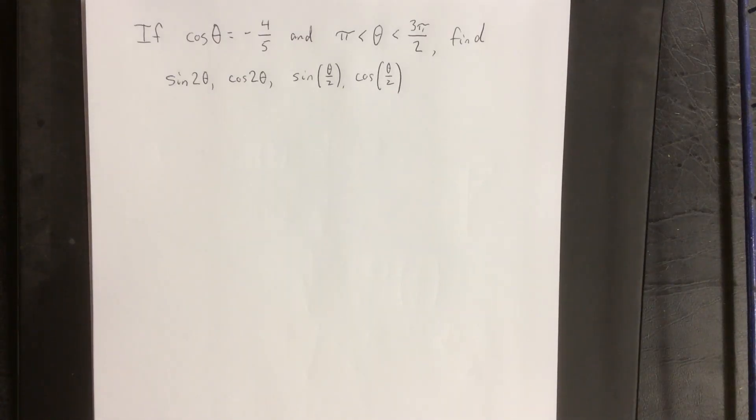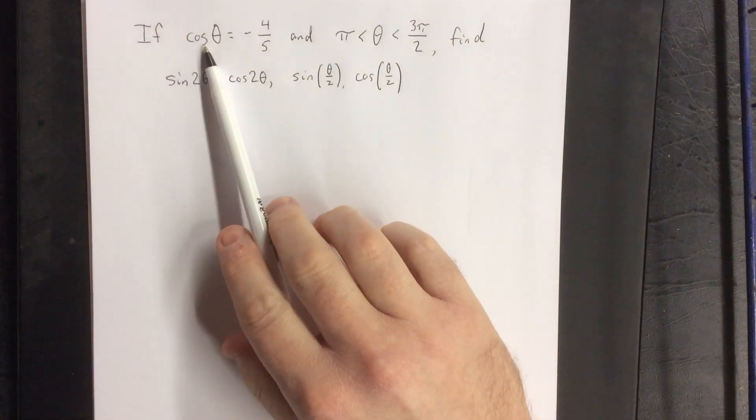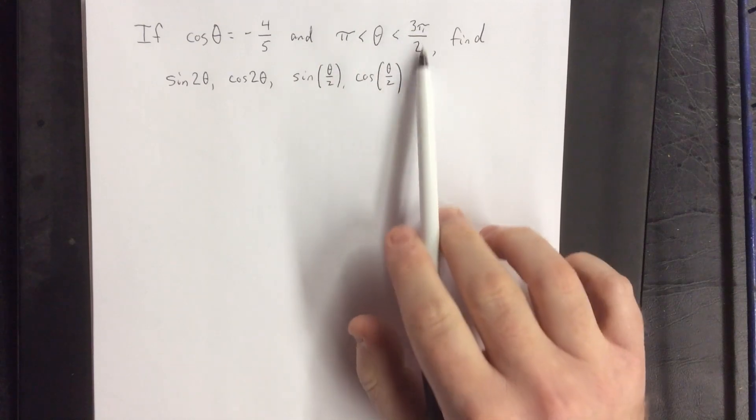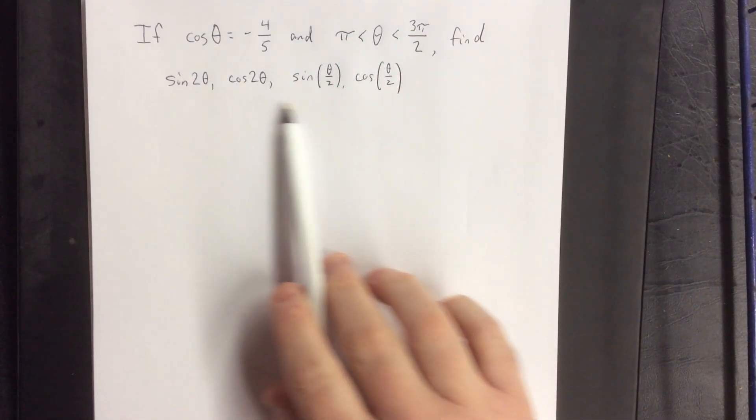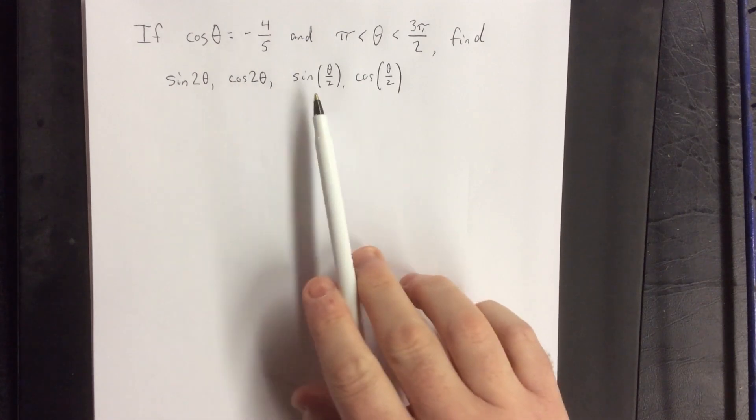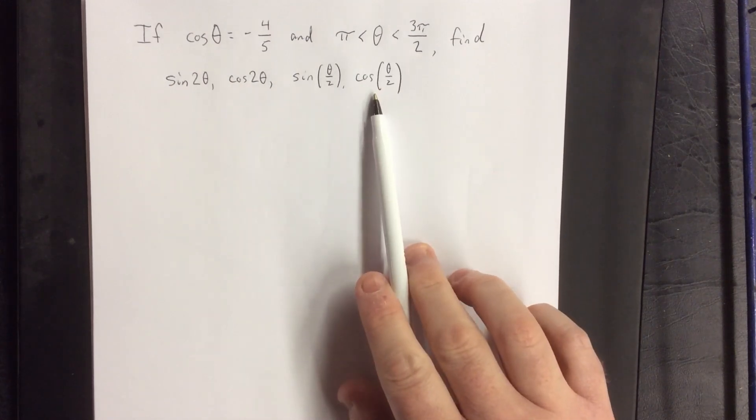For more applications of our half-angle and double-angle identities, I'd like to consider the following situation. If the cosine of theta is equal to negative four-fifths and theta lies between π and 3π/2, I'd like to find these four quantities: sine of the double angle, cosine of the double angle, sine of the half angle, and cosine of the half angle.